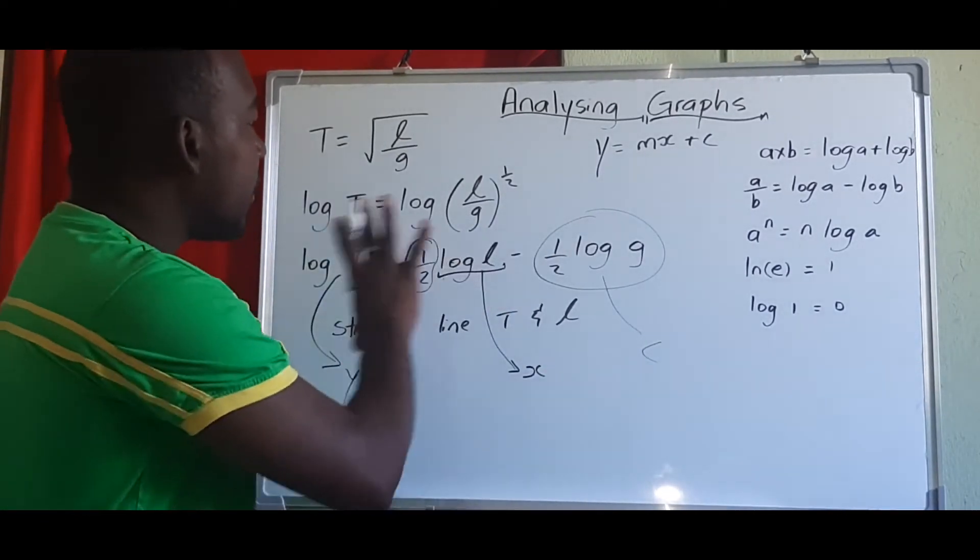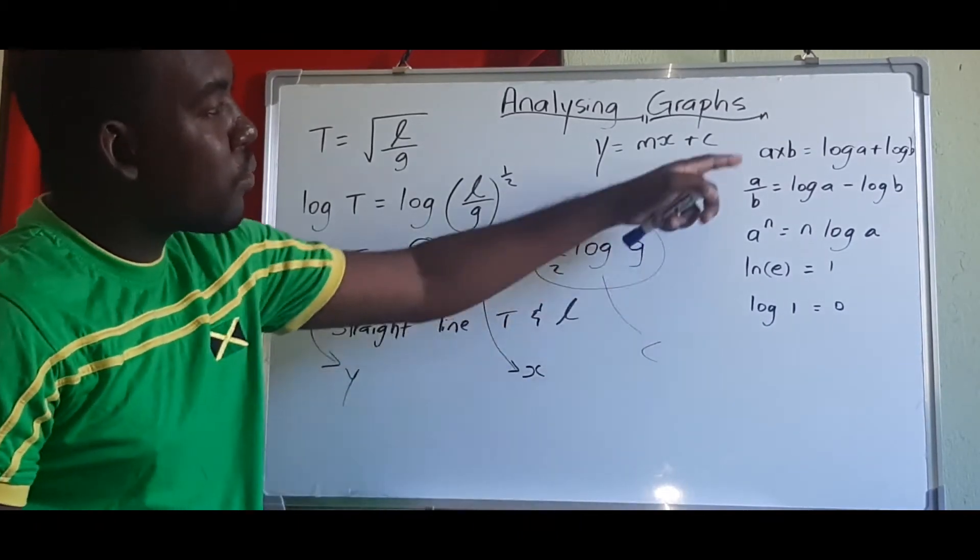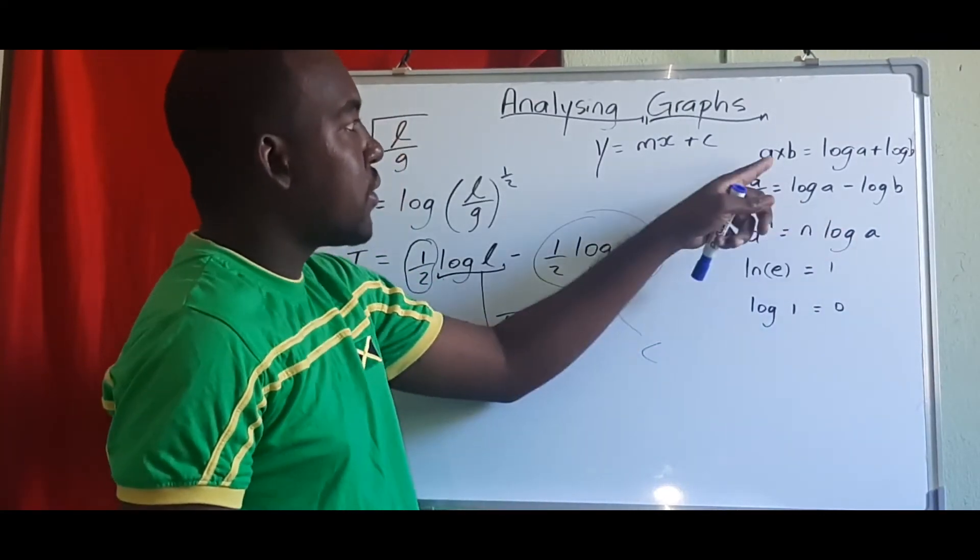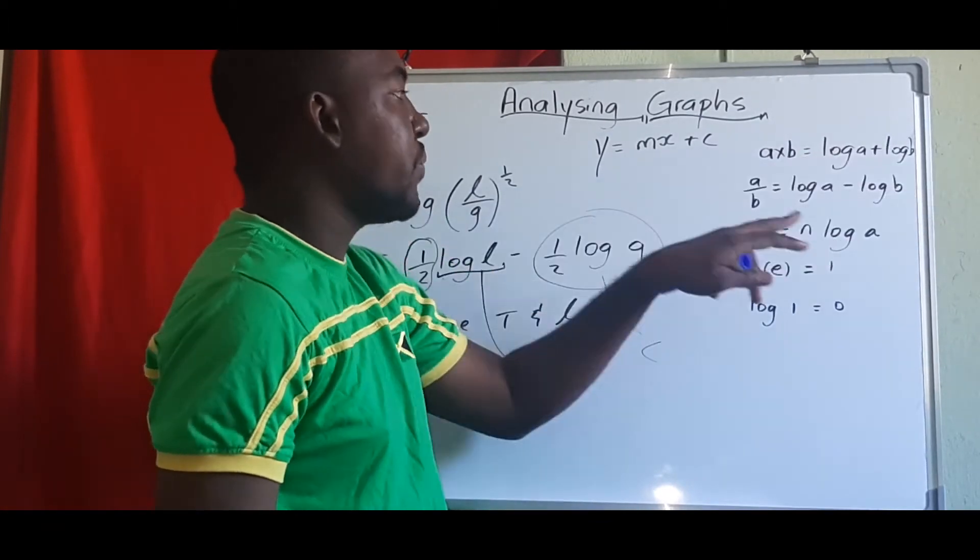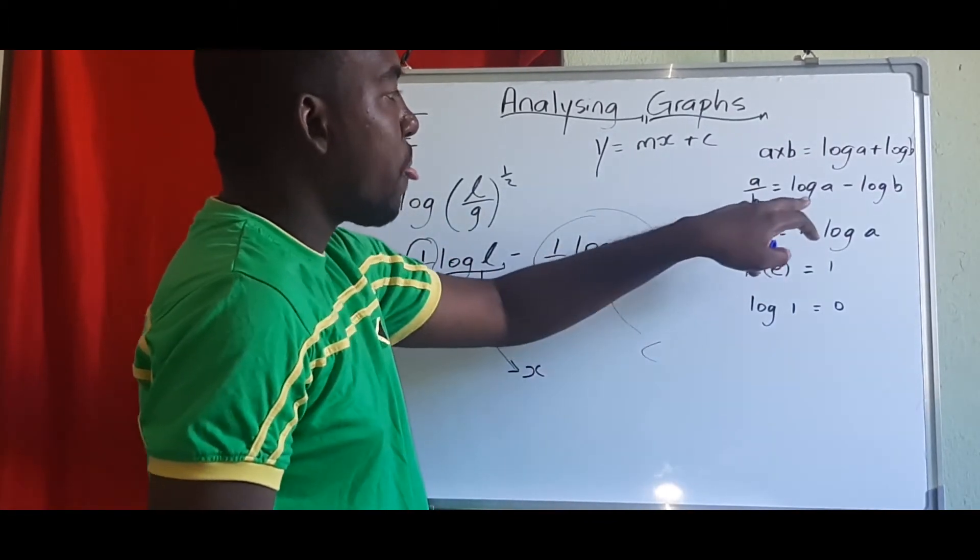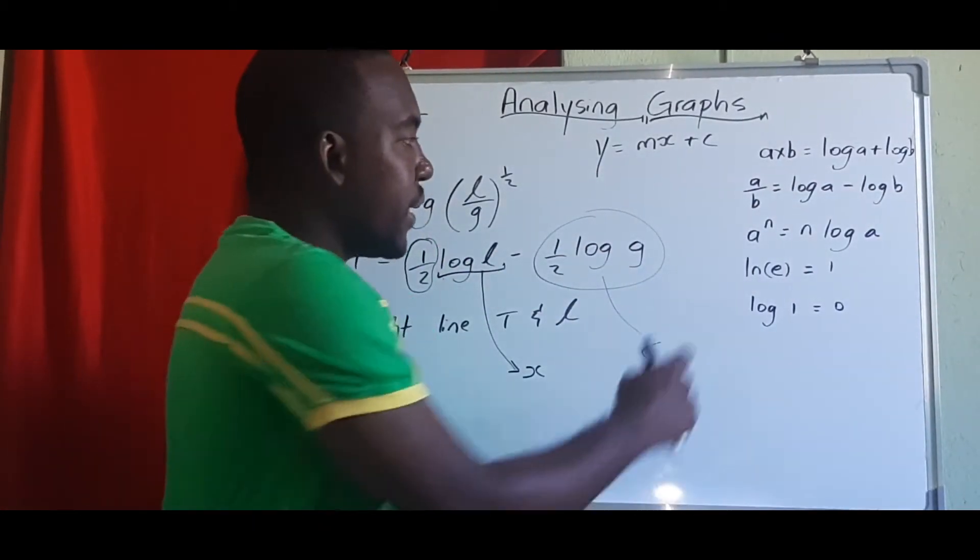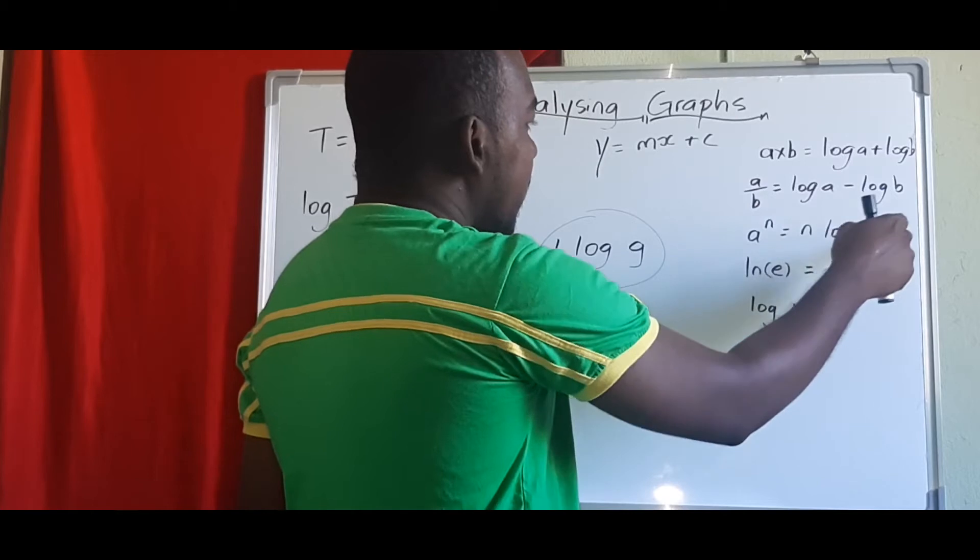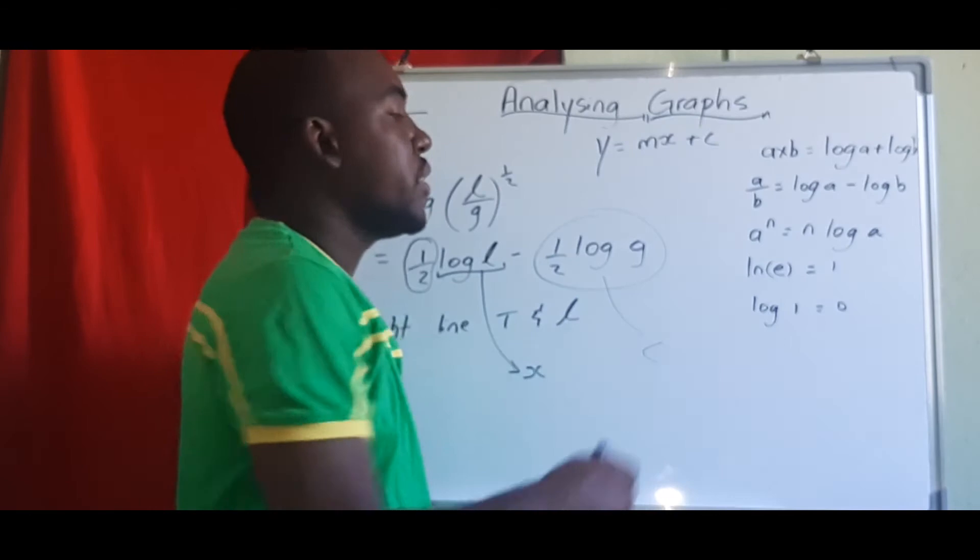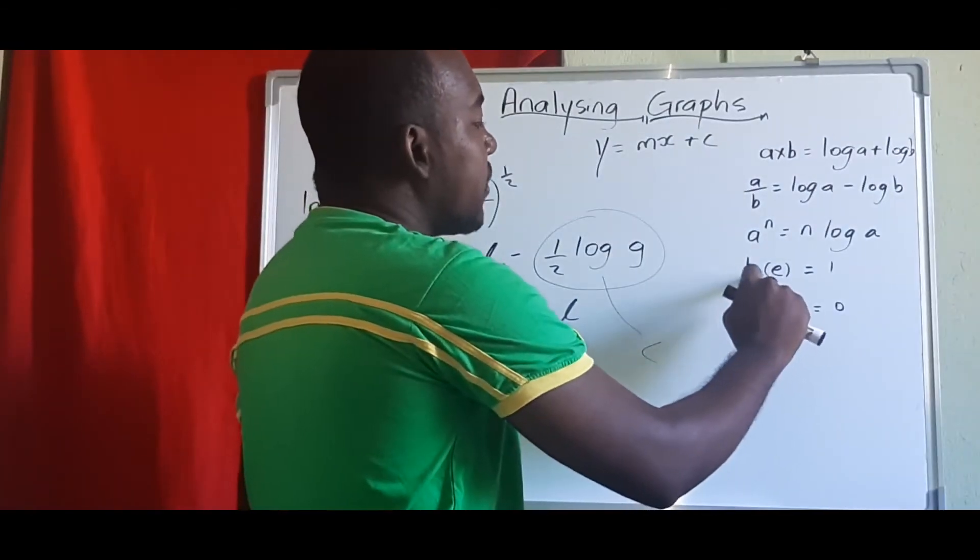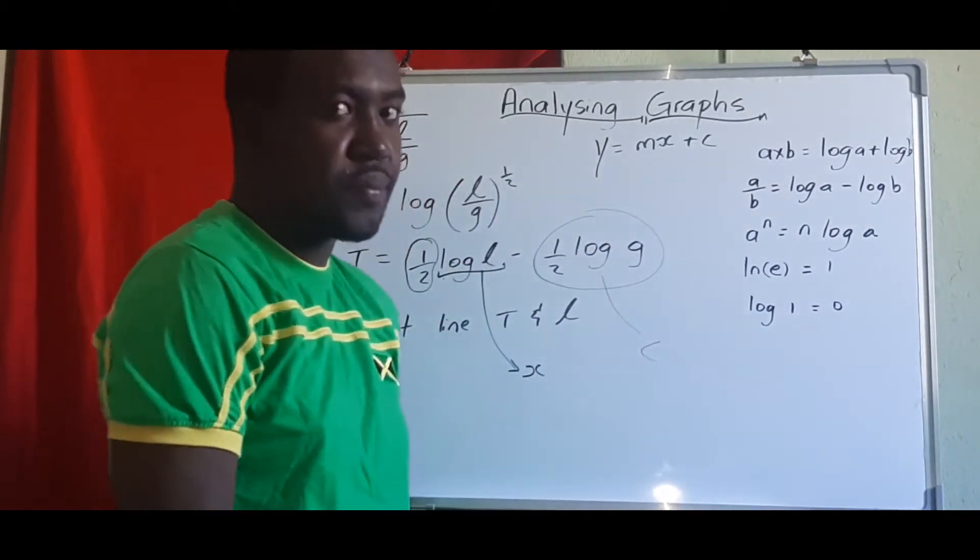So if it's a times b, and you log a times b, it's the same as log a plus log b. If it's a divided by b, then it's the same as log a minus log b. If it's a to the n power, then it's n log a, because we take down the power. And then ln e, exponential e here, if we anti-log e, we get 1, and log of 1 is 0.